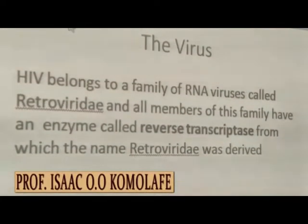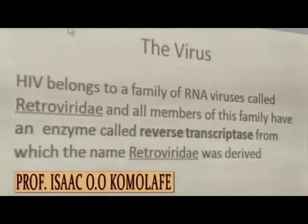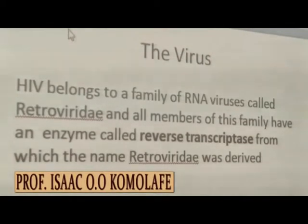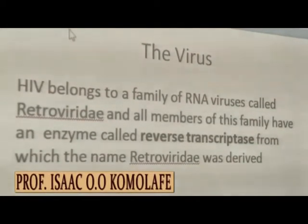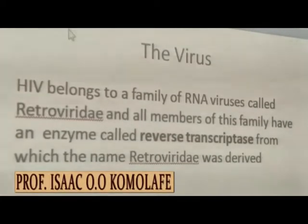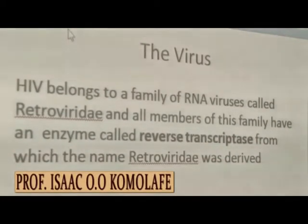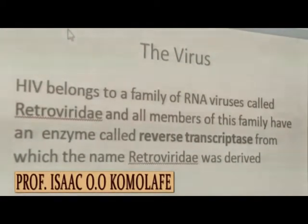How much do we know about the virus? There are 20 different virus families that infect humans. Fourteen of these virus families are RNA virus families, while the remaining six are DNA virus families. HIV belongs to a family of RNA viruses called Retroviridae, and all members of this family have an enzyme called reverse transcriptase, from which the name Retroviridae was derived.